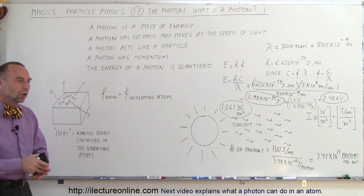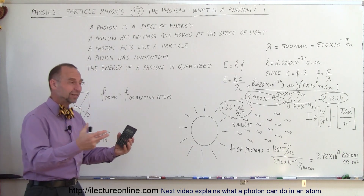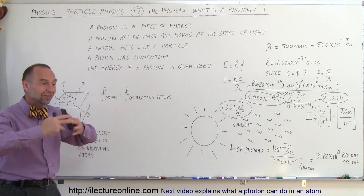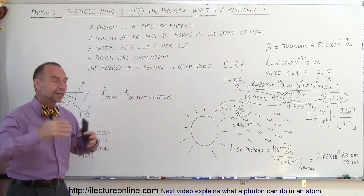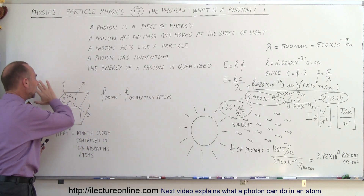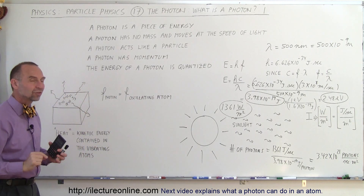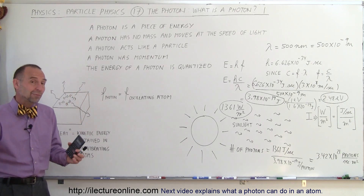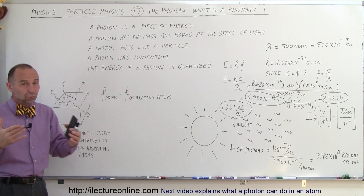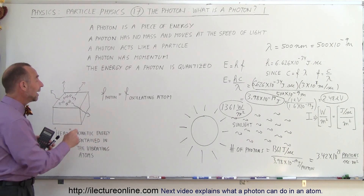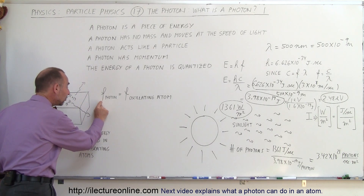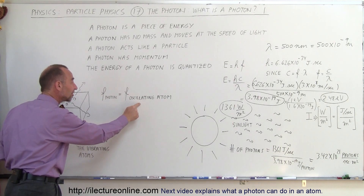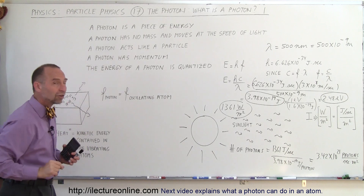That's how objects cool. When you take a hot object, like a hot brick that just came out of the oven and put it on the table, the brick slowly cools down as energy radiates away as electromagnetic radiation from the vibrating atoms. The frequency of the photons leaving the object is equal to the frequency of oscillation of those atoms.